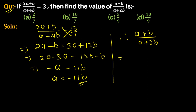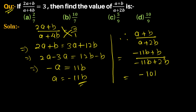So (a + b) / (a + 2b) = (-11b + b) / (-11b + 2b) = -10b / -9b. The negatives cancel and the b's cancel, giving 10/9, which is the required answer.